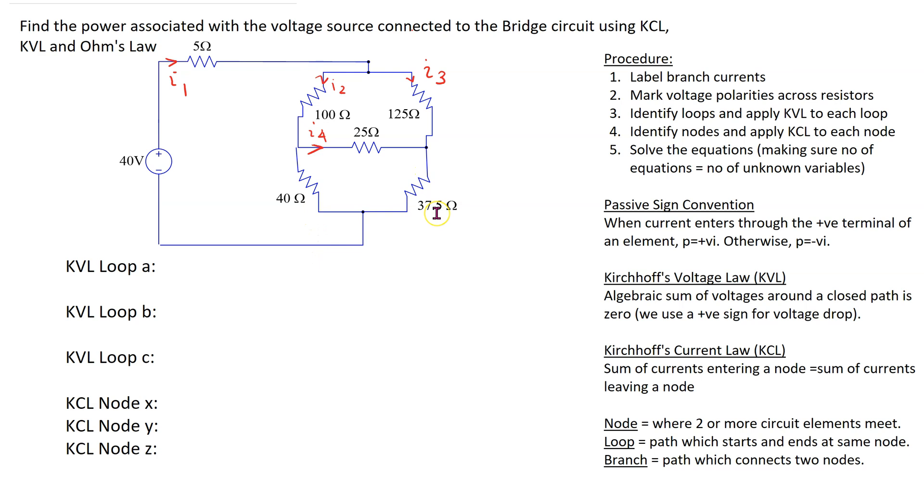The next step is to mark voltage polarities across resistors assuming the labeled branch currents. For the 5 ohm resistor, I1 is entering the resistor at this end and leaving at this end. The end where the current enters is higher potential, and the end where the current leaves is at lower potential. This process is repeated for all remaining resistors, so we obtain the following voltage polarities: plus minus, plus minus, plus minus, and plus and minus.